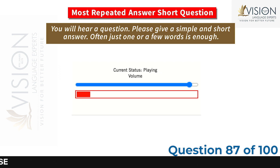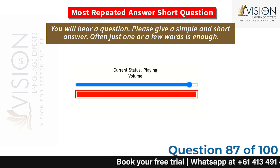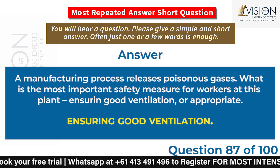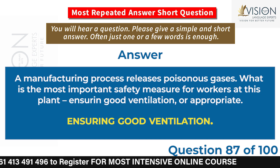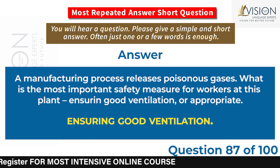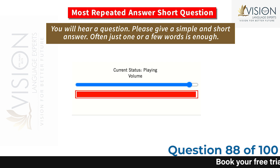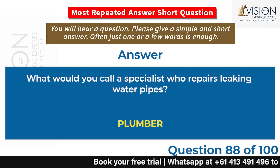A manufacturing process releases poisonous gases. What is the most important safety measure for workers at this plant — ensuring good ventilation, or appropriate protective equipment? Ensuring good ventilation. What would you call a specialist who repairs leaking water pipes? Plumber.